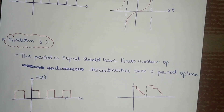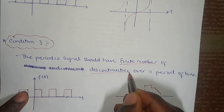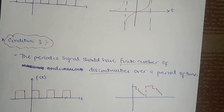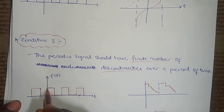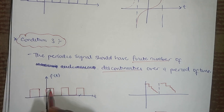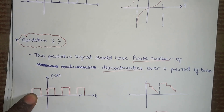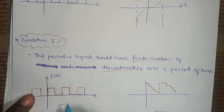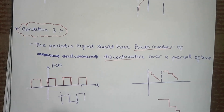The third condition, which is the last condition, says that the periodic signal should have a finite number of discontinuities — turning on, off, on, off in a finite pattern — not randomly on, off, off, on, on, off. We want a finite number of discontinuities over a period of time. Looking at this signal, we see it at zero state, it jumps to a value, then goes down to zero, stays at zero, goes back to that value and keeps going in that pattern. That's finite.